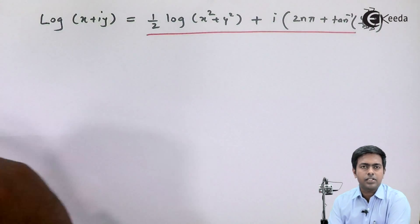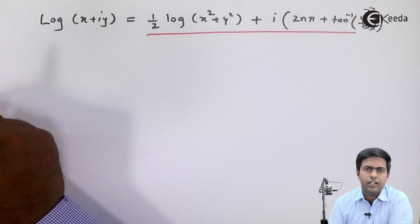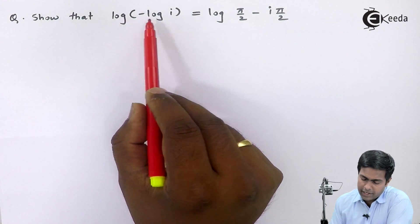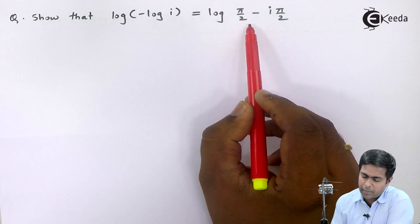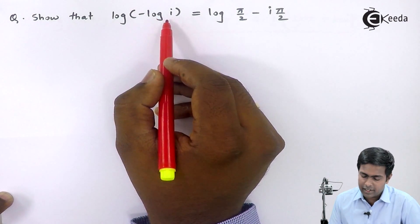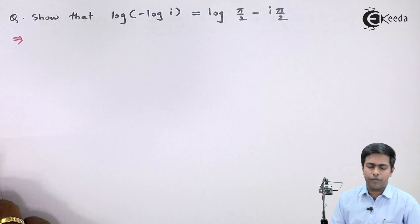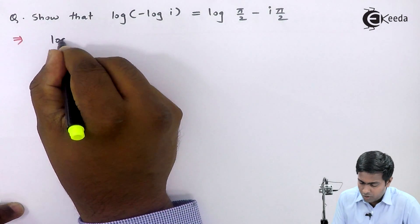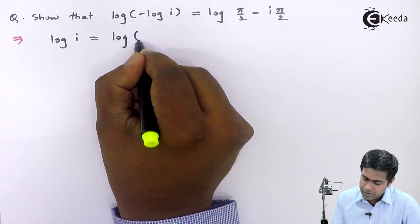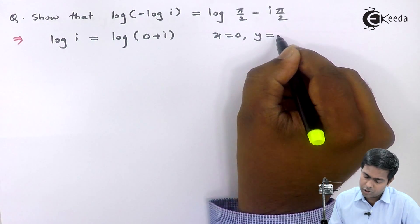These two formulas will be useful for solving numericals. The first numerical asks us to show that log of minus log i equals log pi by 2 minus i pi by 2. The term inside is the logarithm of a complex number, so let's start by finding log of i. Comparing i with x plus iy, we get 0 plus i times 1, so x equals 0 and y equals 1.